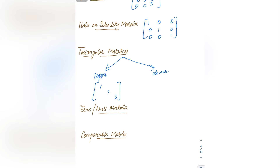Next are triangular matrices. There are two types: upper triangular and lower triangular. In an upper triangular matrix, the elements above the diagonal are non-zero and the elements below the diagonal are zero. In a lower triangular matrix, the elements below the diagonal are non-zero and the elements above the diagonal are zero. If you join the elements, you get a triangle shape pointing up or down accordingly.